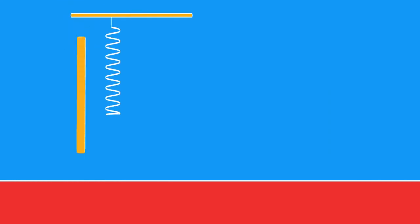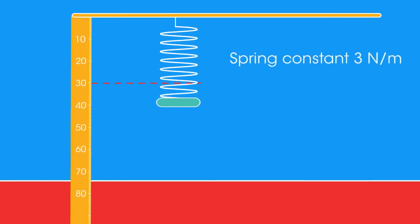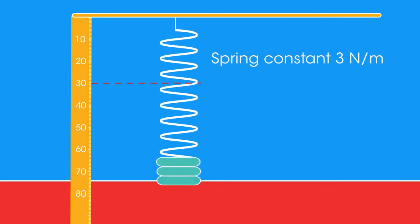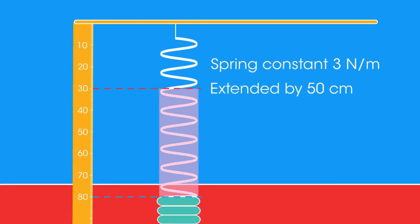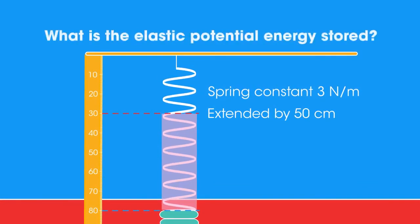Let's try applying this. A spring is stretched. It has a spring constant of three newtons per metre. It's extended by 50 centimetres. What is the elastic potential energy stored by the spring? Pause the video while you work it out.